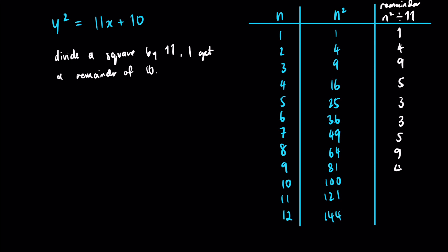100, 99 plus 1, that is a remainder of 1. 121, that's 11 squared. 144 is 1 more than 143, which is 11 times 13. So that's a remainder of 1.